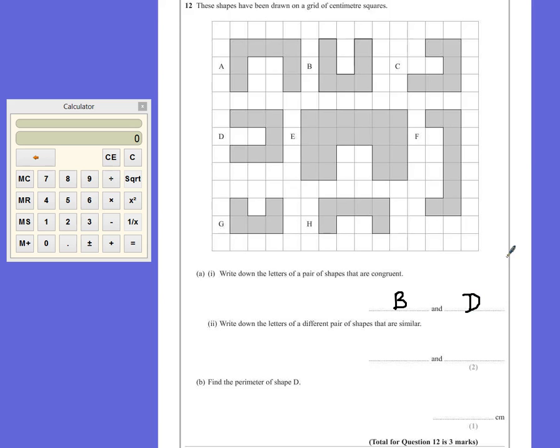Part 2 asked us to write down the letter of a different pair of shapes that are similar. Now a similar shape means that it can also have been enlarged.